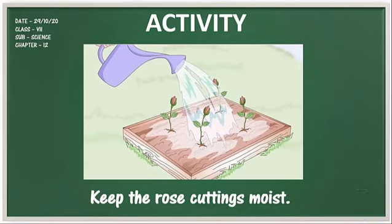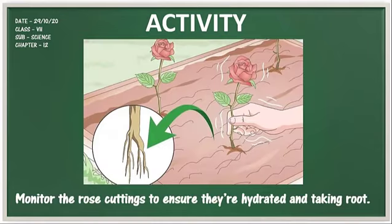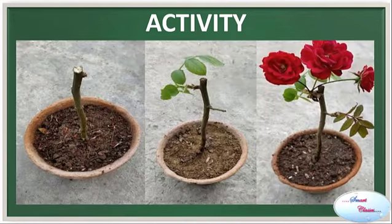Monitor the rose cuttings to ensure that they are hydrated and taking root. Keep an eye on the cuttings to make sure they never dry up and that the cuttings are taking root. You can see the roots are growing by gently tugging on the cuttings — you should feel a slight resistance after a week or two, meaning that roots are growing well. You can try out this activity on your own and observe and record the number of days taken for roots to come out and new leaves to arise.